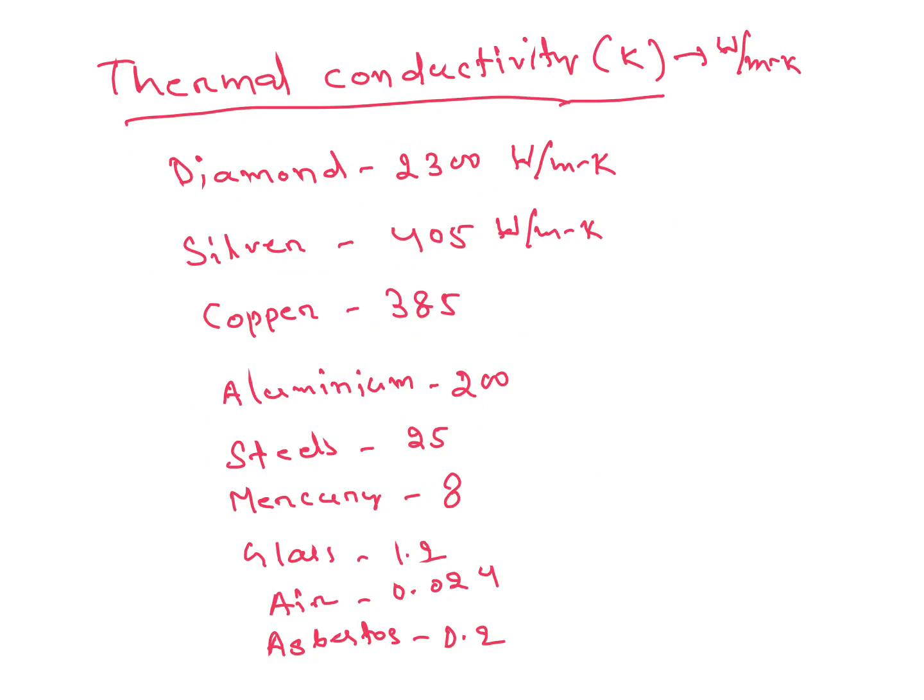Then thermal conductivity table. You have to remember for different materials what is the value of thermal conductivity. It will be helpful in solving problems. So its unit is watt per meter Kelvin. Diamond, for diamond its value is 2300, for silver 405.